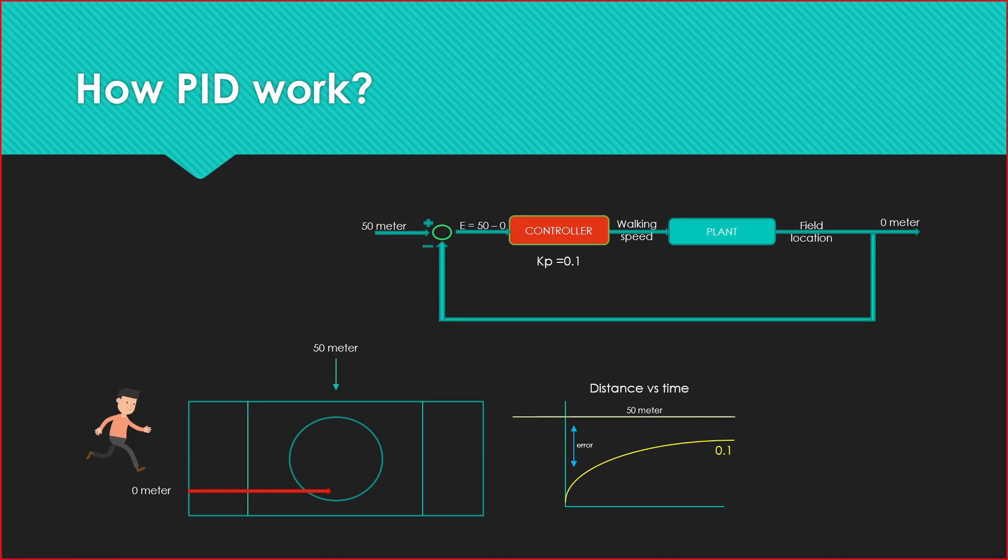And as I go to the field, this will be less than 50, my error will be less than 50. So as I multiply it with 40, what will happen? 4 meter per second. This means as I reach my destination, my error will be less and my walking speed will be less. Is it clear?